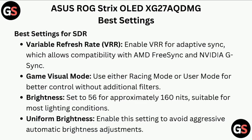For visual mode, use either Racing mode or User mode for better control without additional filters. For brightness, set to 56 for approximately 160 nits, suitable for most lighting conditions.